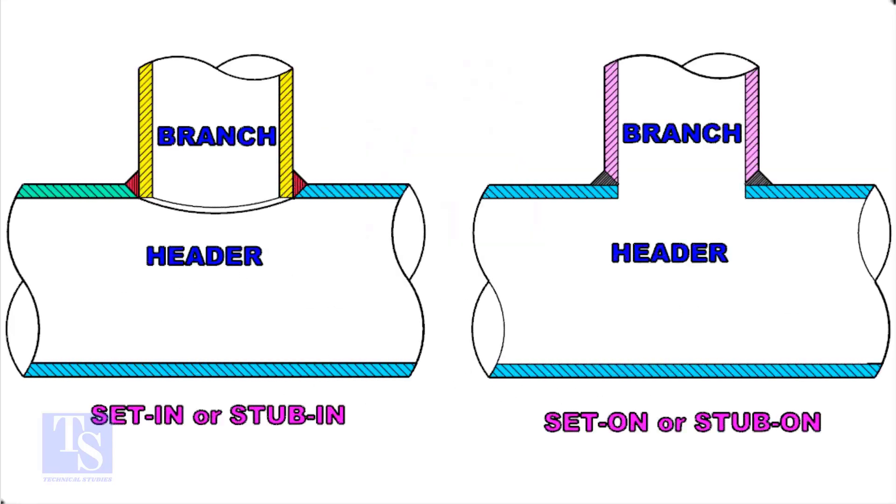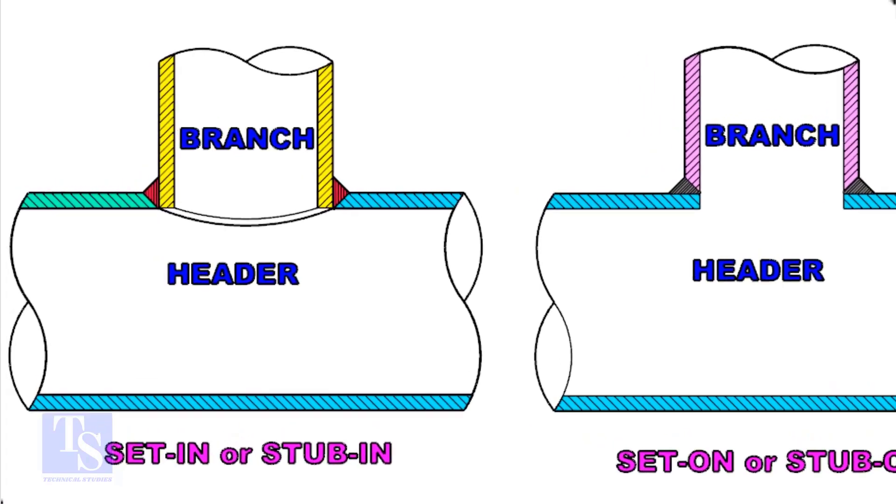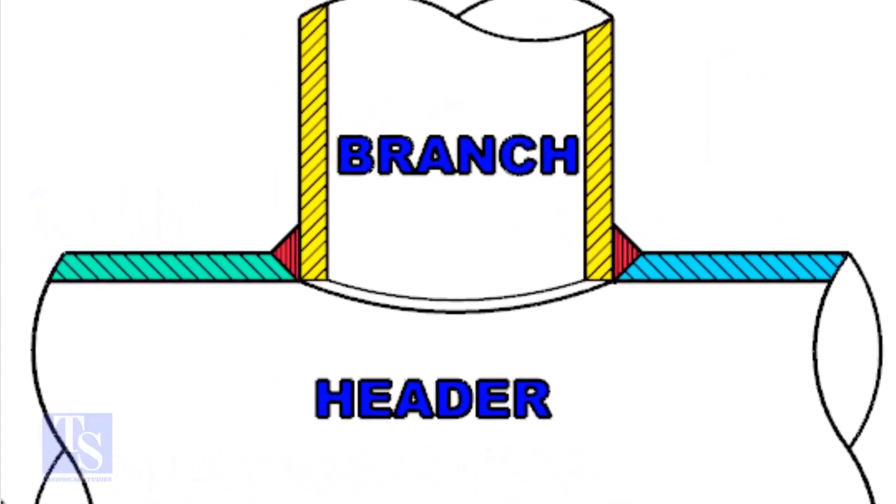Let us check the difference between a stub-in and stub-on connection. Look at the stub-in joint, the bevel is prepared on the header, and the branch pipe is in the header.